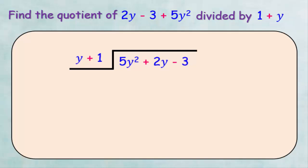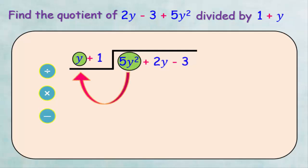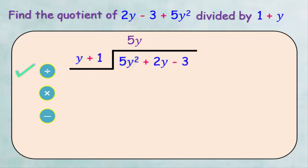Now we follow the three steps of division. We start by dividing 5y squared by y, which gives us 5y, and write it in the quotient. Then we multiply 5y by y plus 1: 5y times y equals 5y squared, and 5y times 1 equals 5y, giving us 5y squared plus 5y.